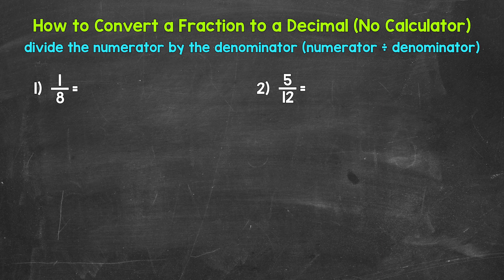Let's jump into number one, where we have one-eighth. When we convert a fraction to a decimal, we can divide the numerator, the top number of the fraction, by the denominator, the bottom number of the fraction. So for number one, we need to do one divided by eight. Let's set this up.